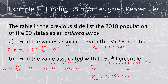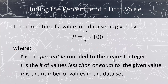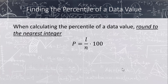The next question is: given a value, what percentile is it associated with? The percentile of a value in a data set is given by p = (l / n) × 100, where n is the size of the data set and l is the number of values less than or equal to that given value. We round p to the nearest integer.